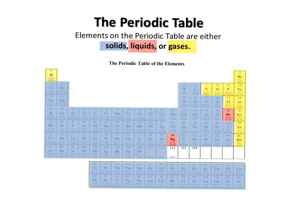All elements come in one of three states of matter: solids, liquids, or gases. Most elements are solid at room temperature, as you can see from the table. A handful are gases, and only two are liquids, bromine and mercury.